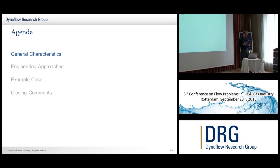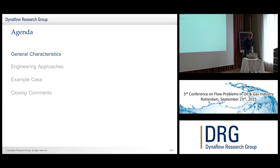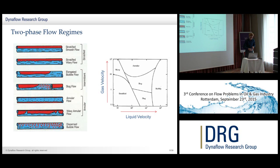I will start with some general characteristics of the two-phase flow within these pipes, then discuss the engineering approaches, and illustrate these using an example of a project. To most of you, this is familiar — we have different types of two-phase flow regimes, illustrated in flow diagrams such as the one shown here, in which the vertical axis has some measure related to the liquid velocity.